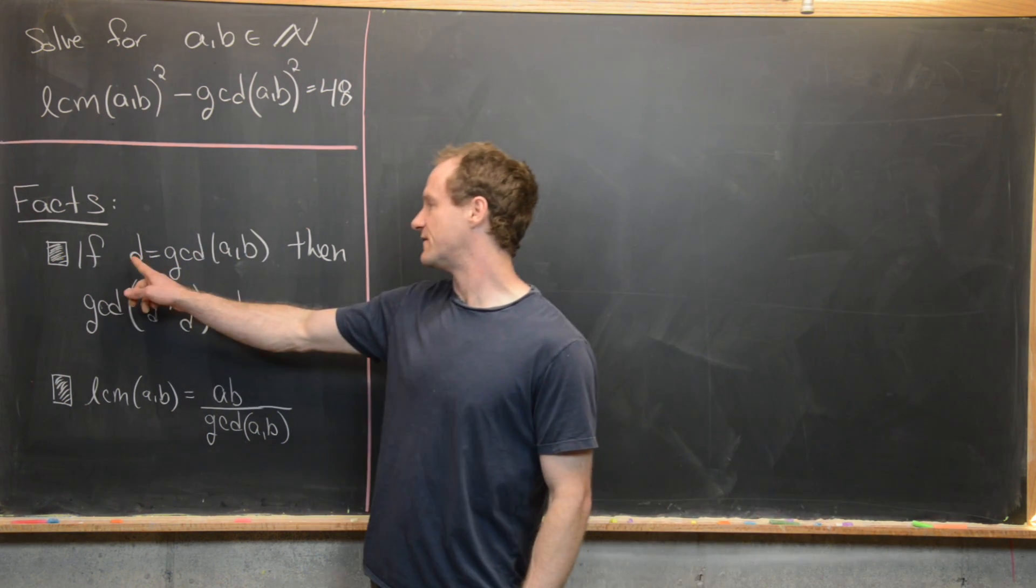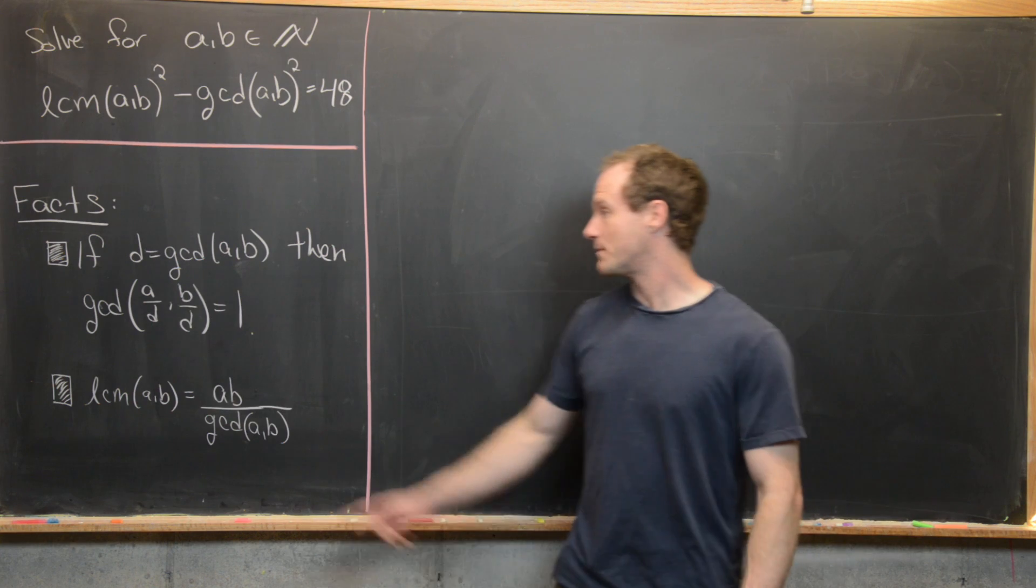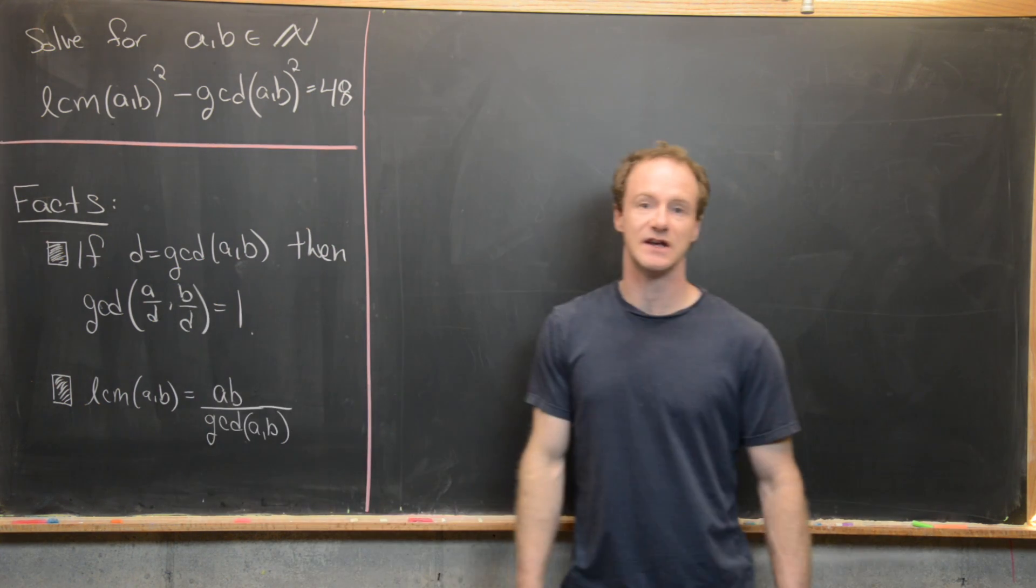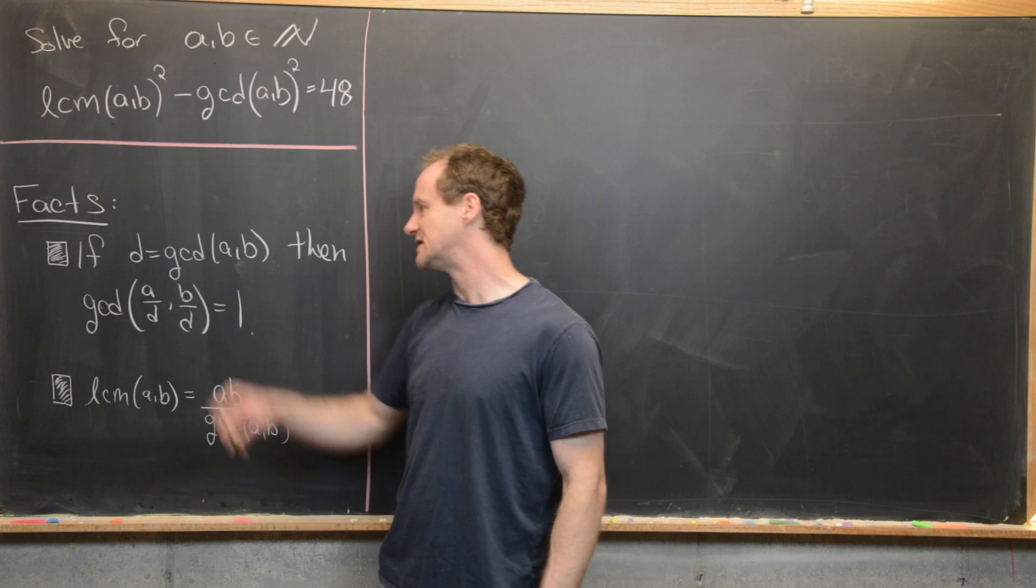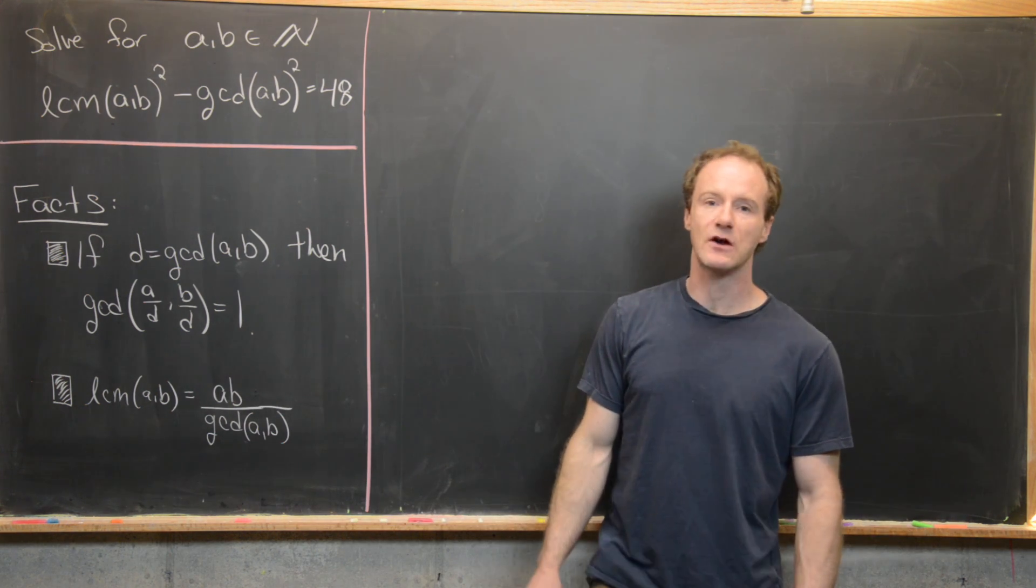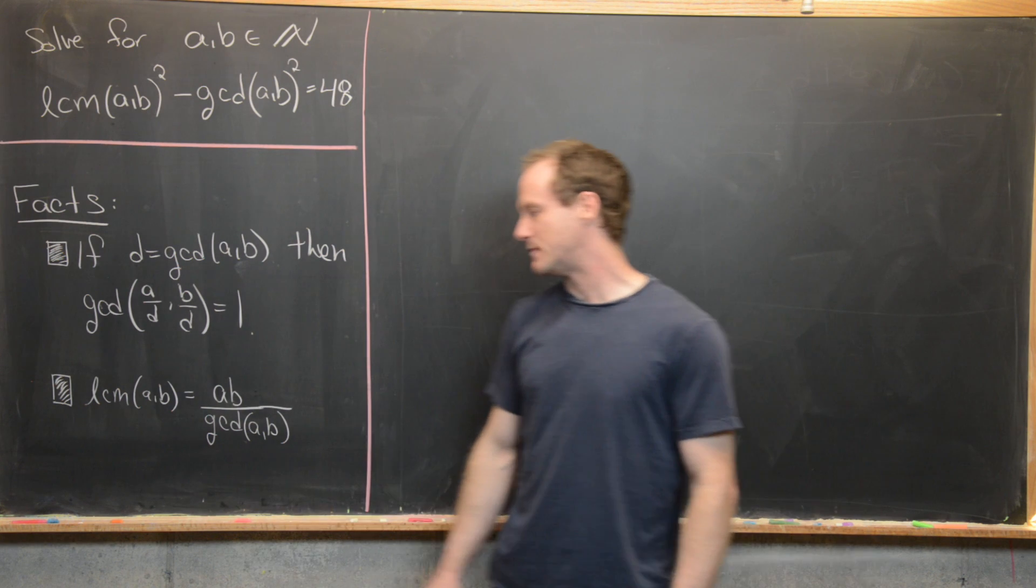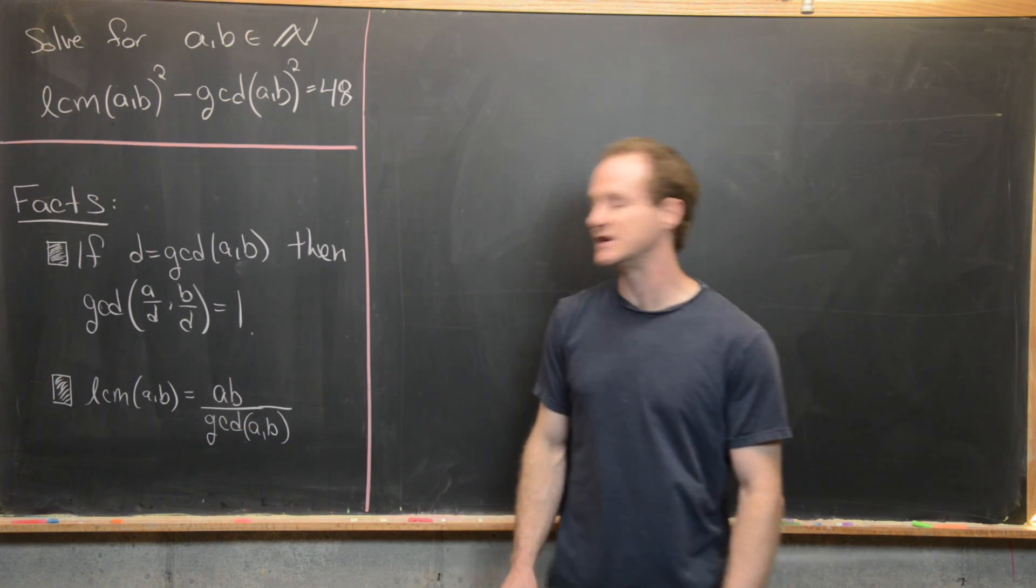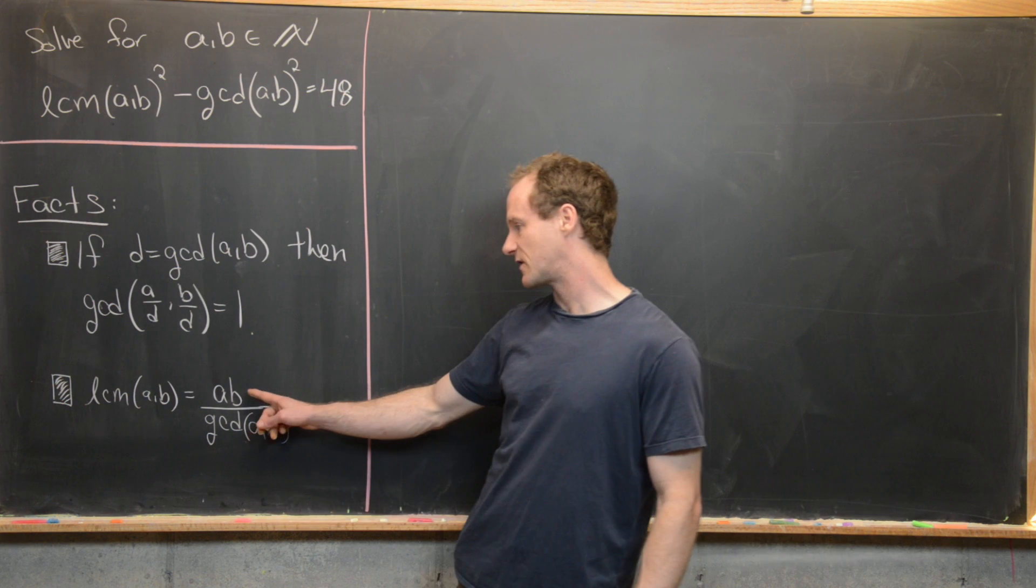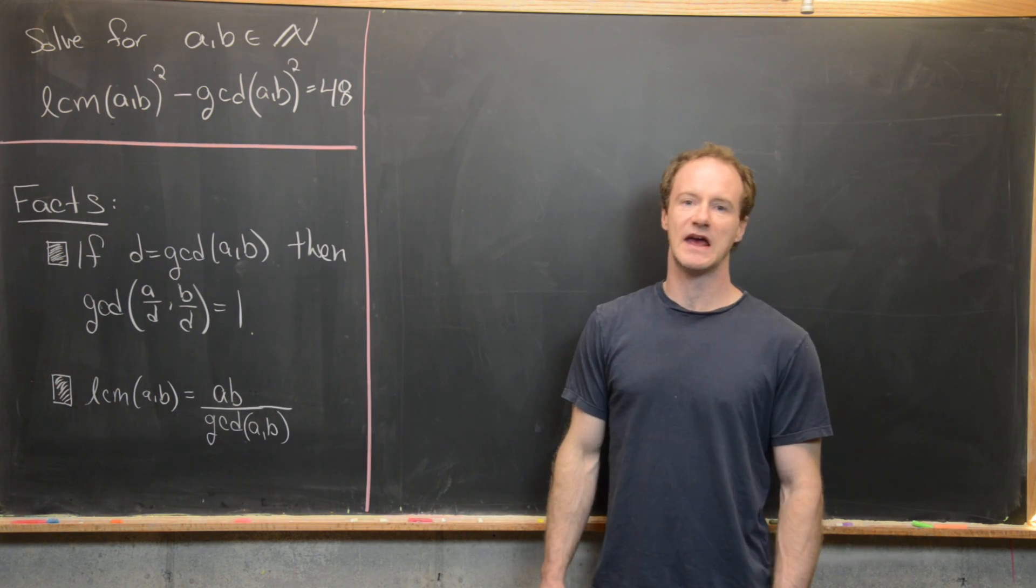So the first thing is that if D is the GCD of A and B, then A over D and B over D are both integers and they are co-prime. In other words, the GCD of A over D with B over D is one. And then next, the LCM of A and B can be written in terms of the product of A and B and the GCD. It's in fact the quotient of A times B with the GCD of A and B.